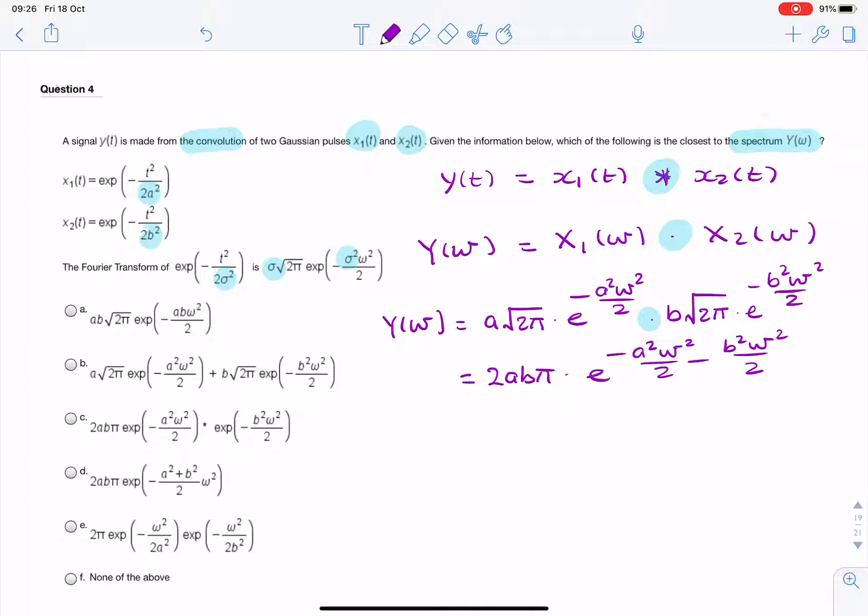If we have one more attempt at simplifying it, it's 2ab pi. If we multiply e to the minus a squared. If you take a squared plus b squared. Then that looks almost exactly like option D.